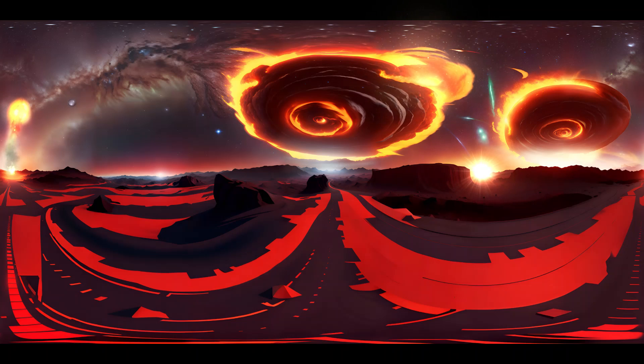Beneath Mercury's rocky surface, we encounter a dense and metallic core. Comprising approximately 70% of the planet's volume, this core is proportionally larger than any other planet in our solar system.